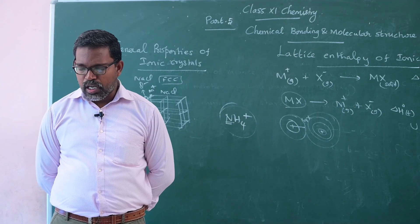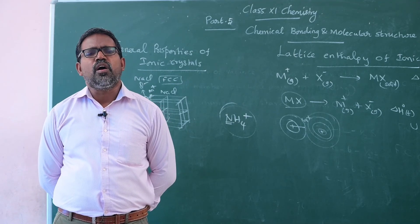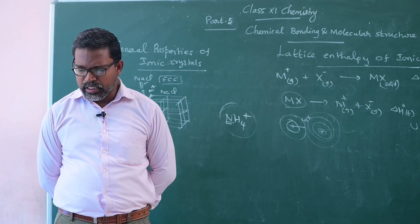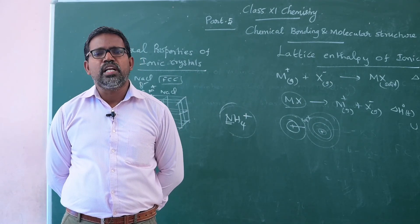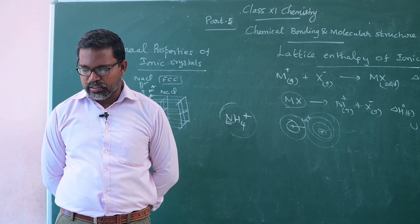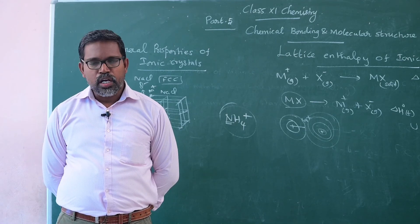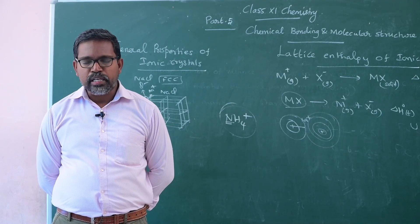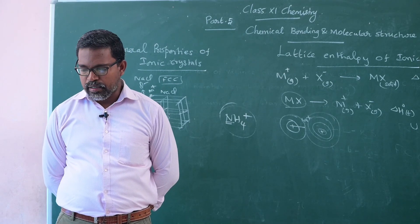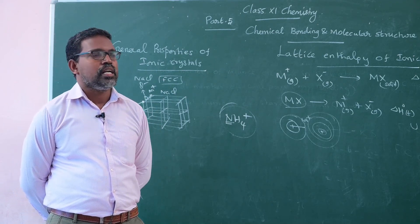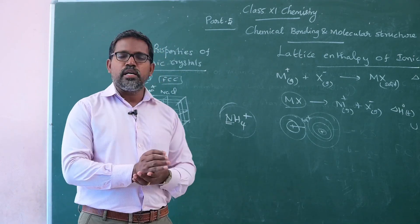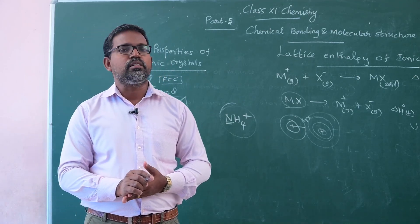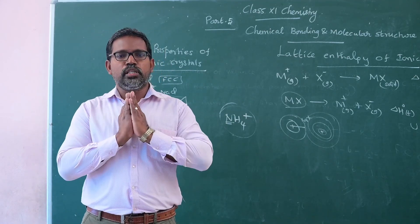Non-directional nature: the ionic bond is always non-directional in nature because in ionic compounds each ion is surrounded by oppositely charged ions uniformly throughout the crystal system. Therefore, the electric field is non-directional, and thus the ionic compound is non-directional in nature. These are some important properties of ionic or electrovalent compounds. Thank you.